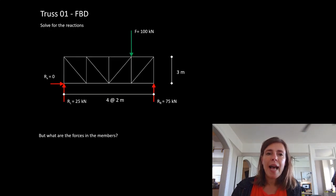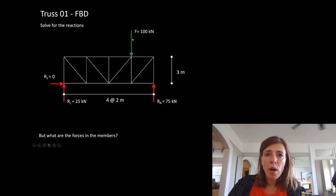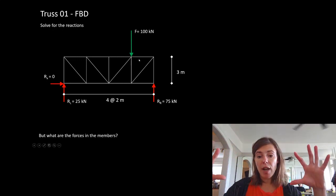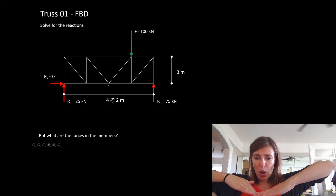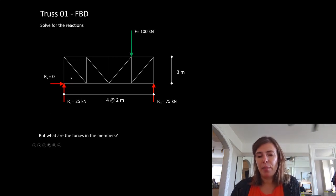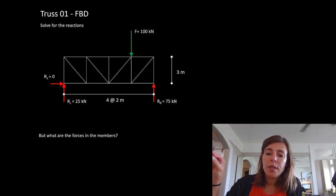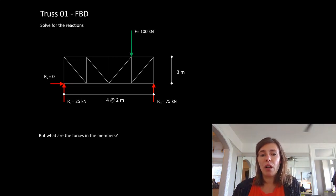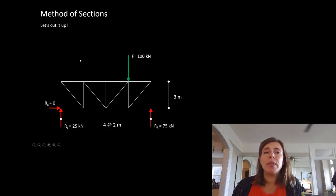We want to know what's happening to all of these internal members. Our whole goal is to find out what structural members we need in here to resist the load, because this 100 kilonewtons is getting over here and over here somehow, moving through that truss. We can see that some of it's going to go to the top chord and some to the bottom chord. We need to know what those forces are so that we can make sure we find the members with reduced capacity greater than the factored loads. So once we solve for reactions, we need to do something called method of sections.